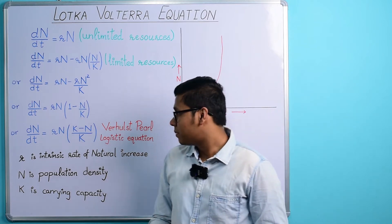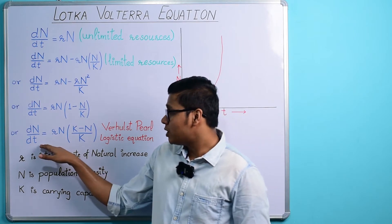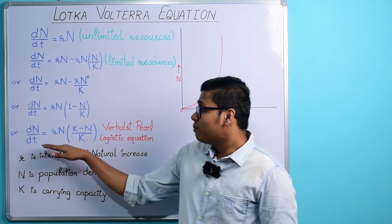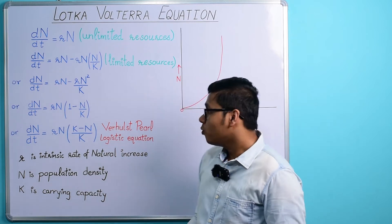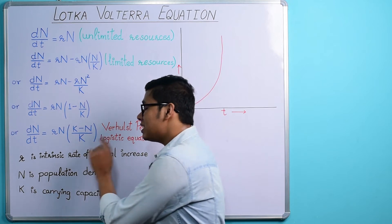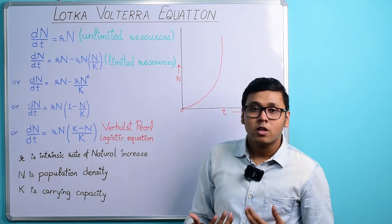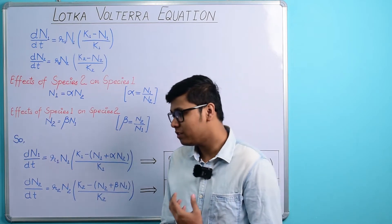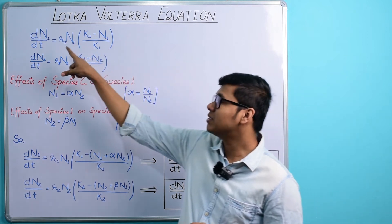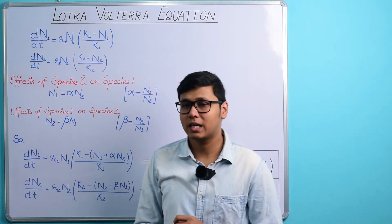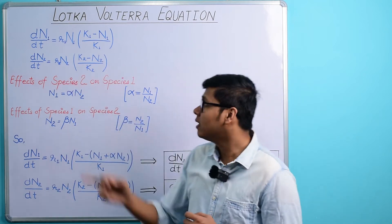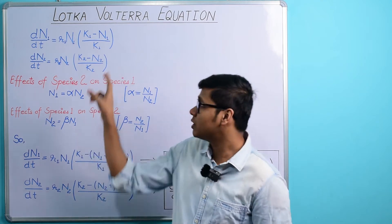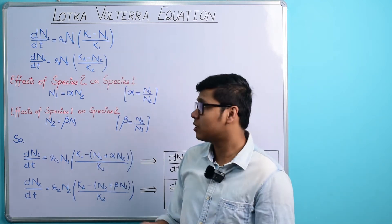Now we have an equation for population growth when intraspecific competition is taking place. We can modify this equation for two different populations. For species 1, the equation becomes dN₁/dt = r₁N₁(K₁−N₁)/K₁, and for species 2 it becomes dN₂/dt = r₂N₂(K₂−N₂)/K₂. Now we are going to add some interspecific competition coefficients to see the effect of interspecific competition on the population growth of each species.